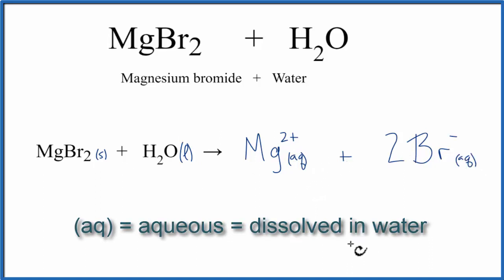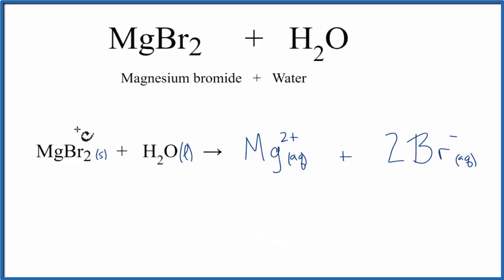And that makes this the equation for MgBr2 plus H2O, magnesium bromide and water. Do note, if you left this out, the water would evaporate, and you'd end up with solid MgBr2 again.